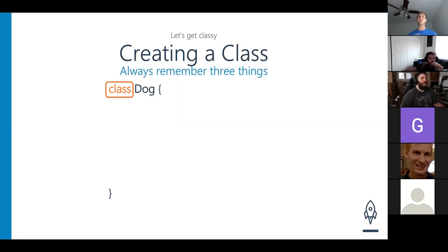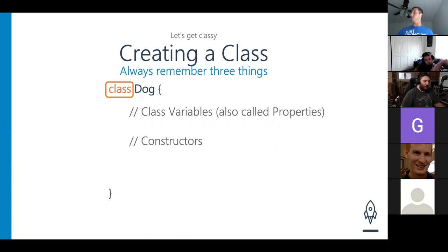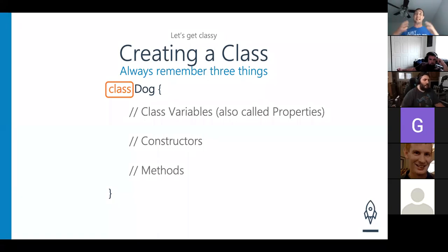In our Java classes, we're always going to have three things. The first one is class variables, also called properties — you use them within the class to contain information and remember it throughout methods, constructors, and other things. The second is constructors, which go beneath the class variables — always put your constructors beneath the class variables. And then finally we have our methods, which go below the constructors. Make sure you are framing your class in this structure.